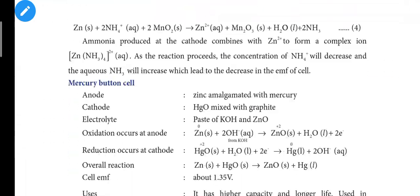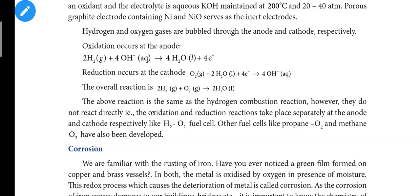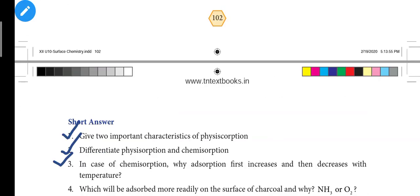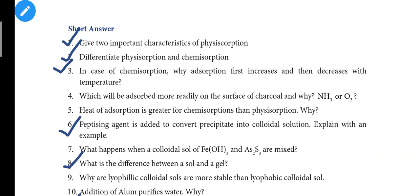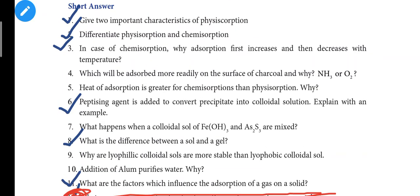Next lesson is surface chemistry, the tenth lesson. Book back: First question - give two important characteristics of physisorption. Second question - differentiate physisorption and chemisorption. That's important, so understand the differences between physisorption and chemisorption. Third question: In case of chemisorption, why does adsorption first increase and then decrease with temperature?